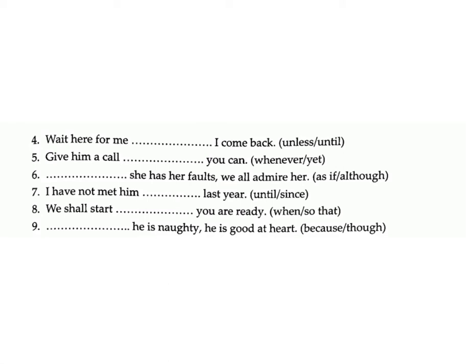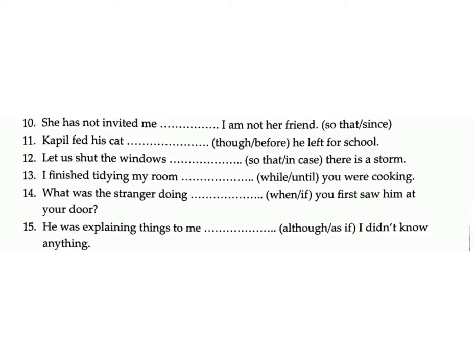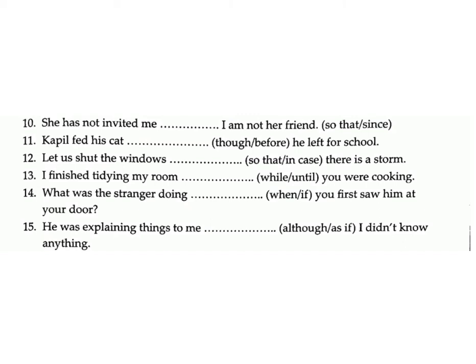Six: '— she has her faults, we all admire her.' (as if / although) Answer: although. Seven: 'I have not met him — last year.' (until / since) Answer: since. Eight: 'We shall start — you are ready.' (when / so that) Answer: when. Nine: '— he is naughty, he is good at heart.' (because / though) Answer: though. Ten: 'She has not invited me — I am not her friend.' (so that / since) Answer: since. Eleven: 'Kapil fed his cat — he left for school.' (though / before) Answer: before.